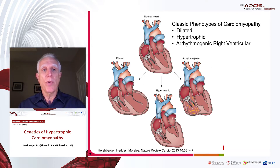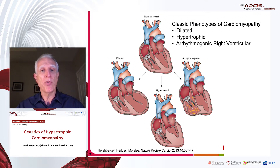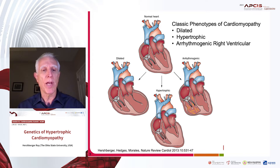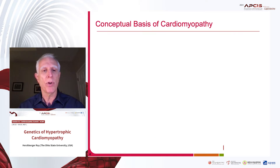These are the classic phenotypes of cardiomyopathy as shown: dilated, hypertrophic, and ARVC. I will juxtapose dilated with hypertrophic cardiomyopathy. We've really learned a lot over the last 20 to 30 years about how both types of cardiomyopathies emerge.